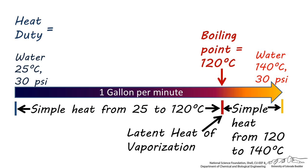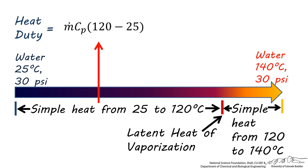The temperature increase from 25 to 120 is described by this simple heat term. The vaporization is described by this term, and the increase from 120 to 140 is described by this simple heat term. Let's look at each of these terms more closely.